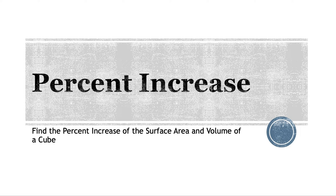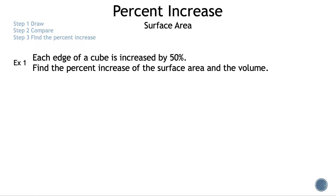Percent increase. Find the percent increase of the surface area and volume of a cube. Now let's get started with example 1. The steps are: Step 1, draw. Step 2, compare. Step 3, find the percent increase. The question reads: each edge of a cube is increased by 50%. Find the percent increase of the surface area and the volume.